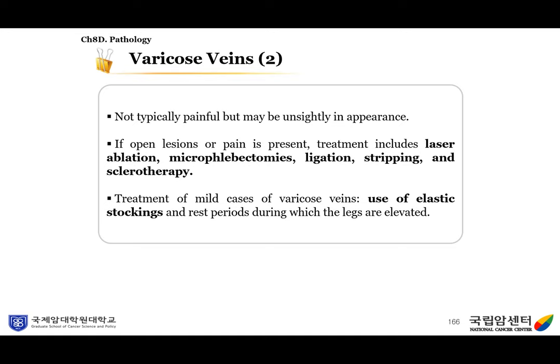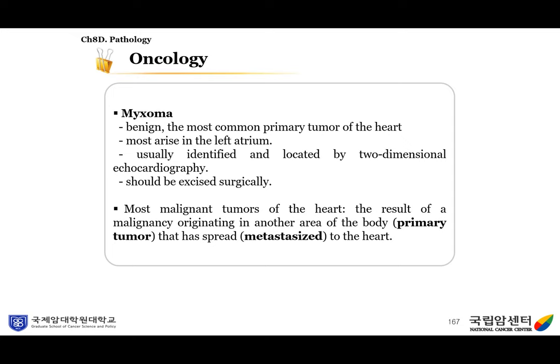For mild cases of varicose veins, we can use elastic stockings and rest periods during which the legs are elevated. In oncology, cardiac cancer or neoplasm is rare, but myxoma — which is benign — is the most common primary tumor of the heart. Myxoma most often arises in the left atrium, usually identified by two-dimensional echocardiography, and should be excised surgically. Most malignant tumors of the heart are the result of a malignancy originating in another area of the body that has spread (metastasized) to the heart.